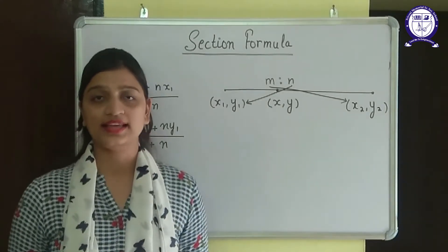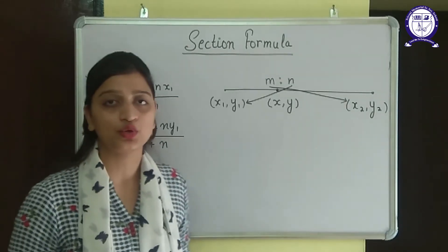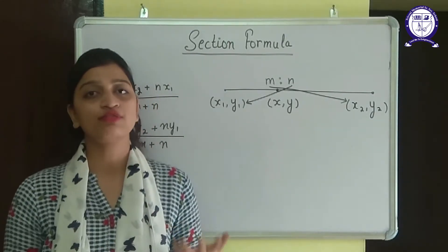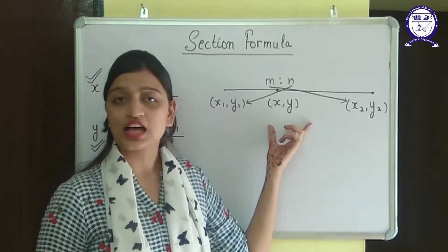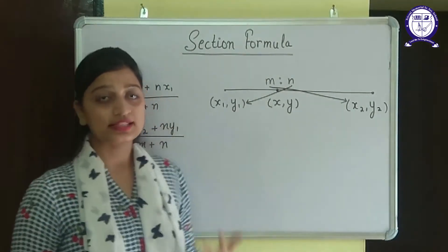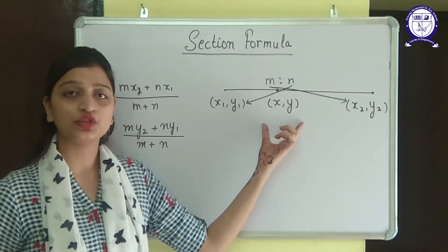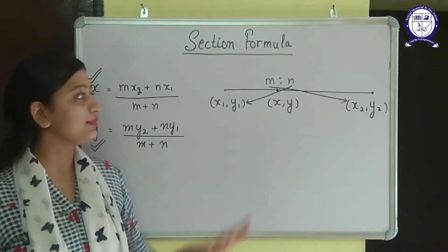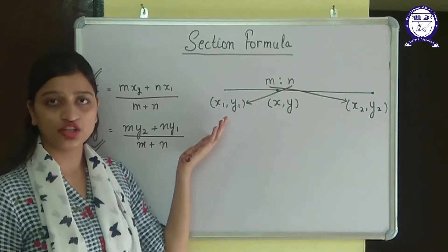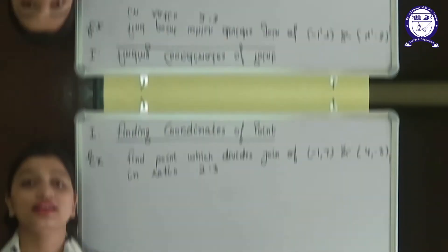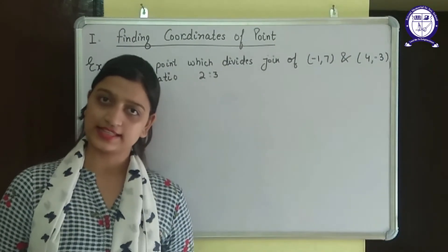In this exercise, every question will have three things given and you need to find the fourth. Not every question asks for the value of (x, y). Sometimes (x, y) is given and you need to find the ratio, or sometimes the end points and ratio are given and you need to find the dividing point. There are certain types of questions which can be asked in this exercise.